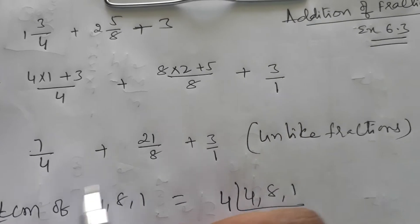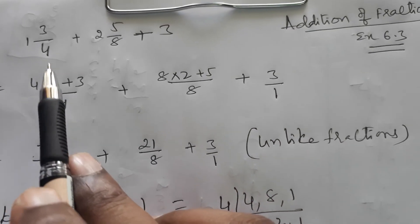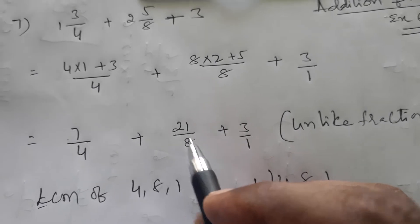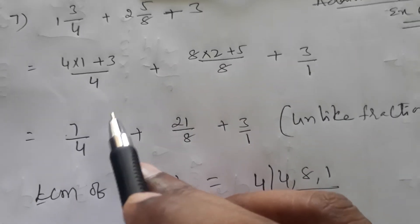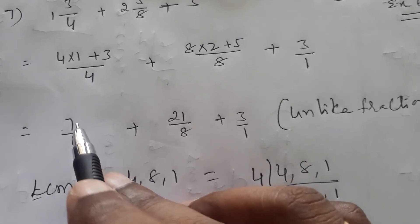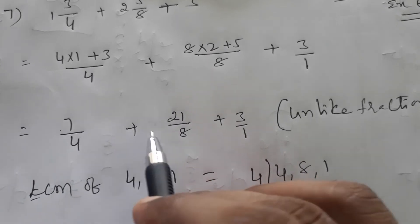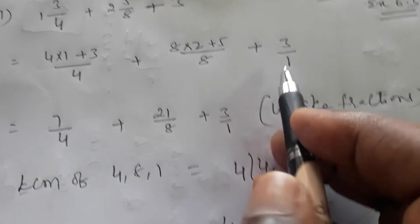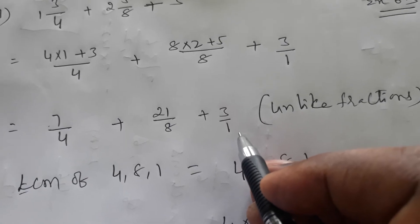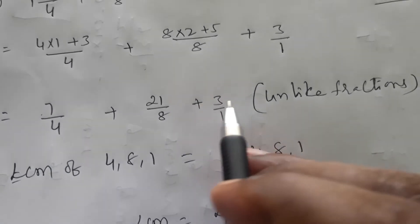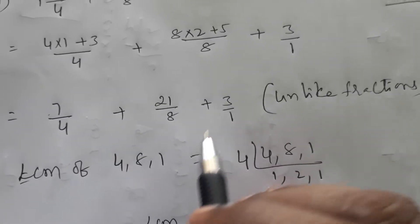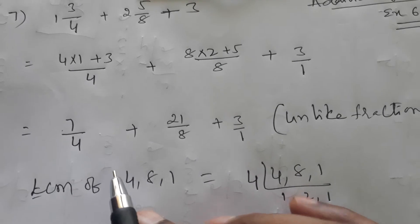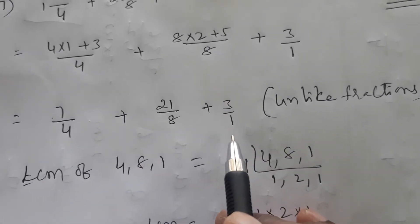Now you have converted the mixed fractions to normal fractions. These are in the form of improper fractions — any time you convert a mixed fraction, you get an improper fraction, meaning the numerator is bigger than the denominator. So we now have 7/4, 21/8, and 3/1. These are unlike fractions.